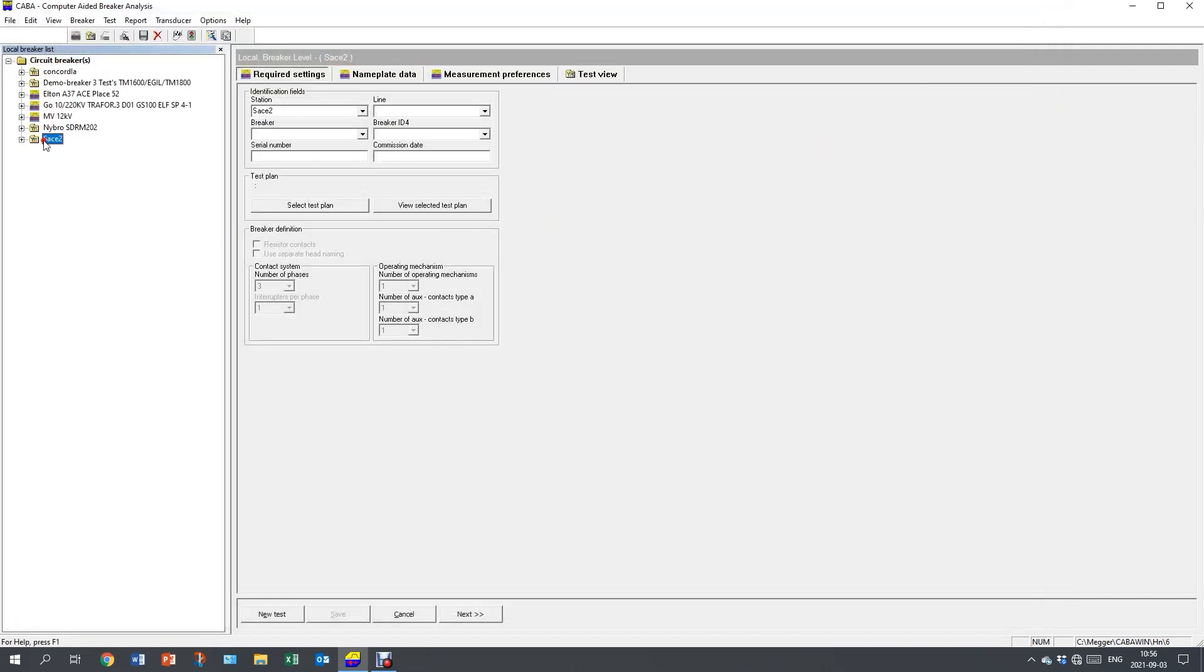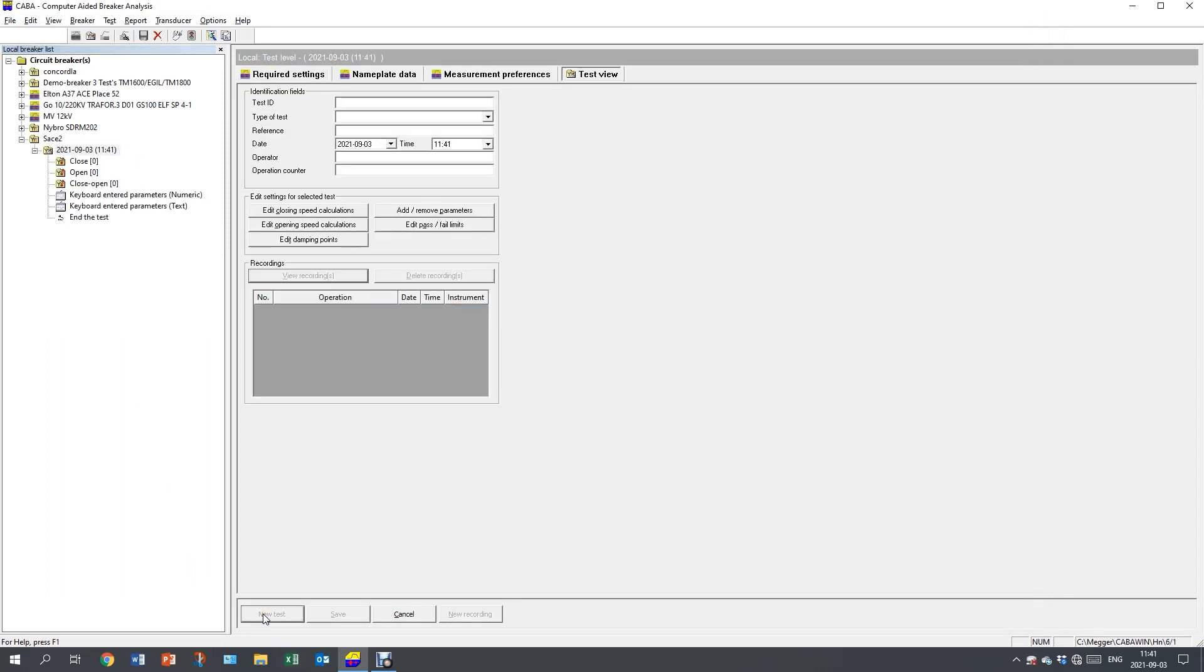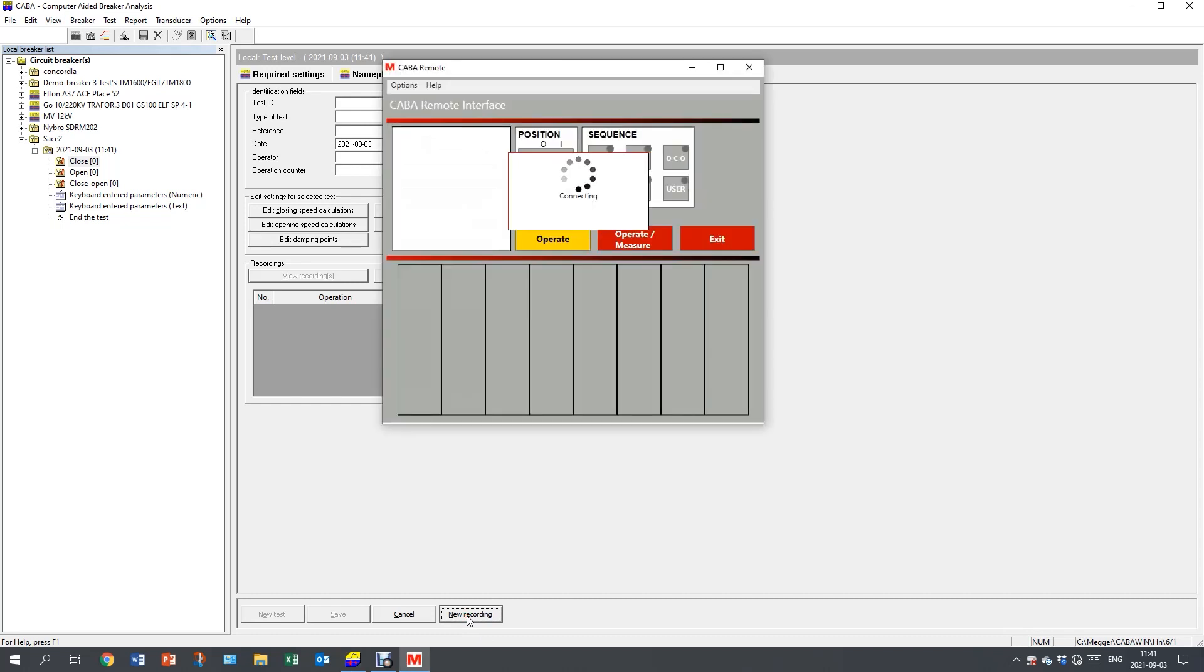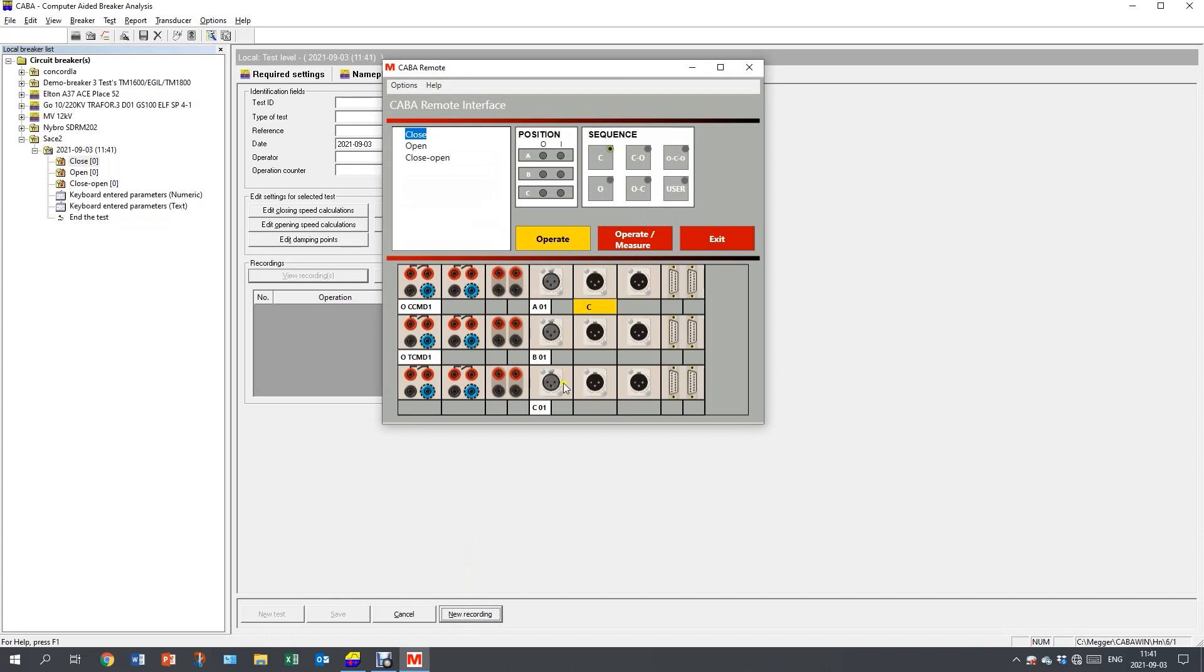And here I have my breaker in the list. I start with creating a new test and select close for the first operation. I do a new recording. And I need to confirm the motion by clicking on the flashing C for the analog channel.